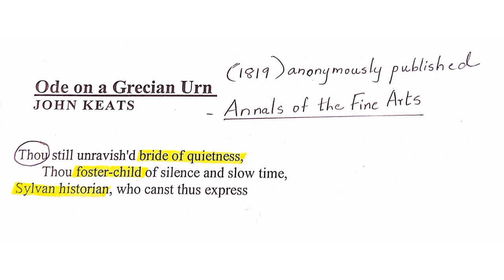The year 1819 was a very productive year for Keats. This was after the period of the deaths of his brother and mother, and he had gone through a lot of personal suffering. All these odes — 'Ode on a Grecian Urn,' 'Ode to a Nightingale,' 'Ode on Melancholy' — were written during this period.